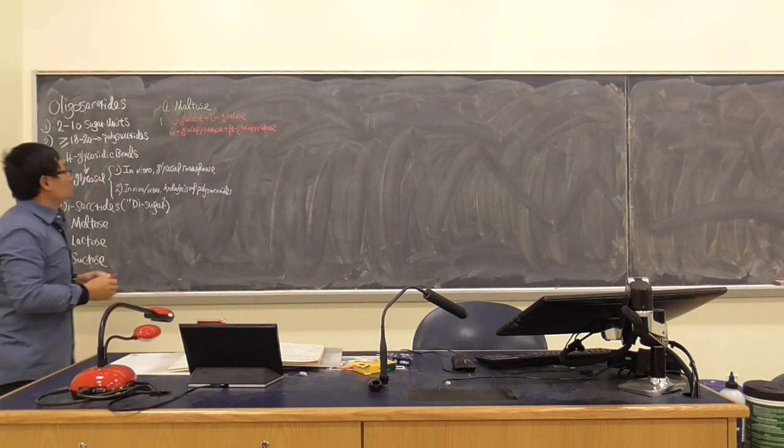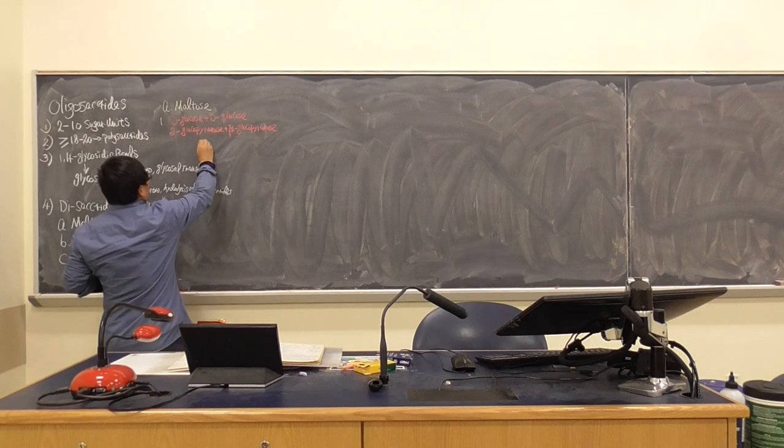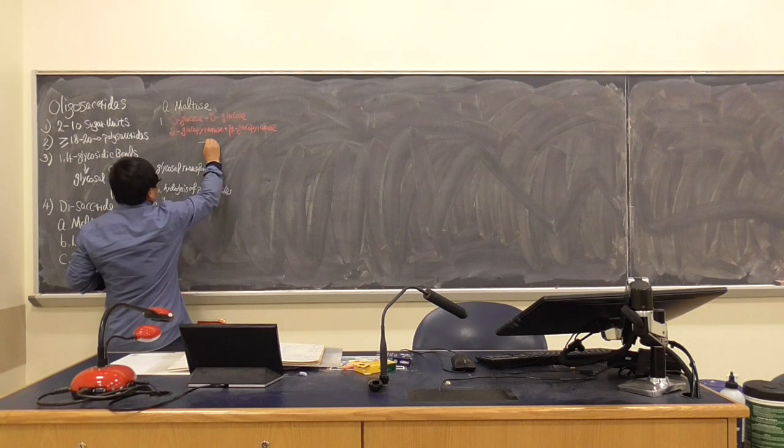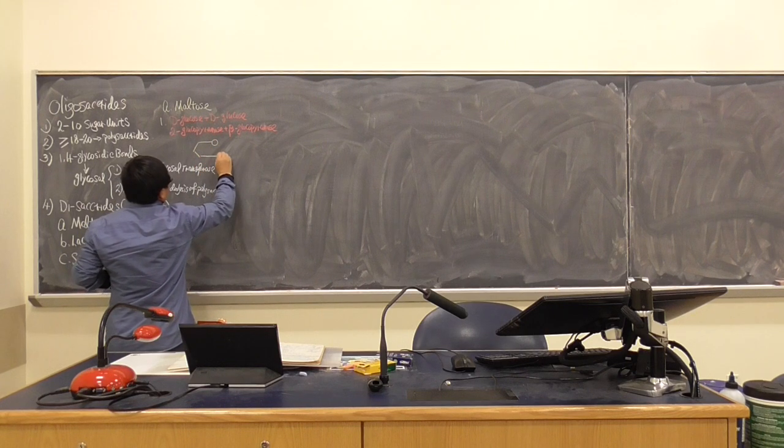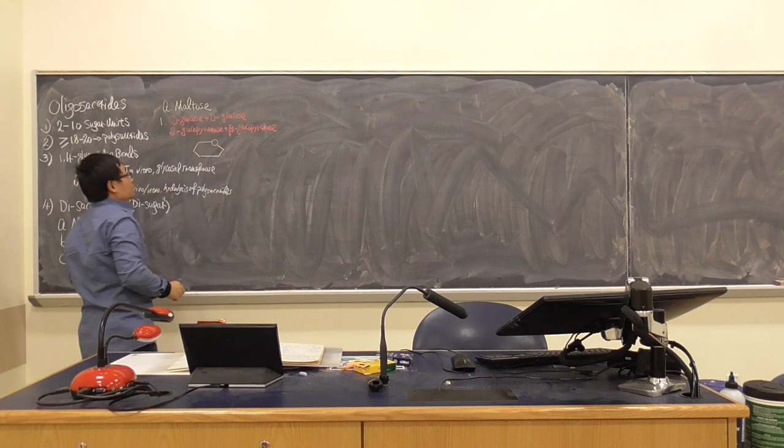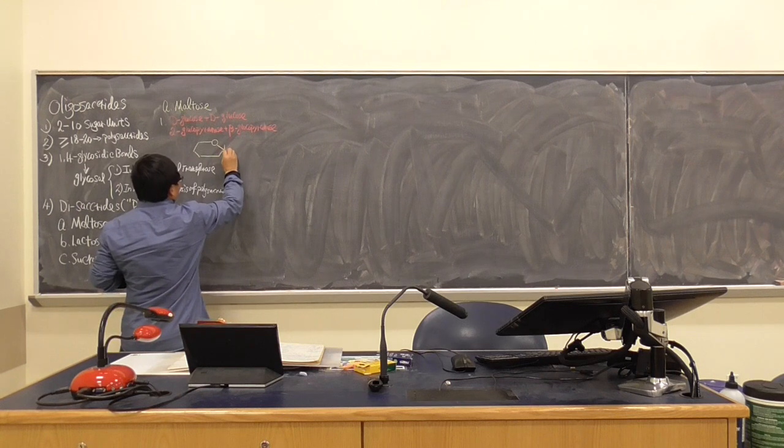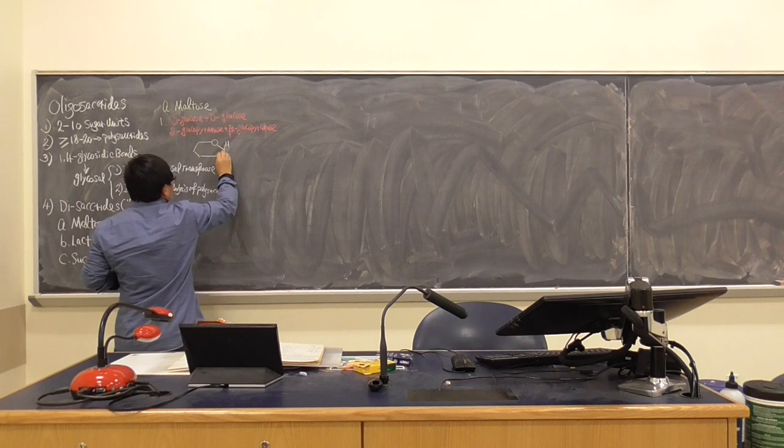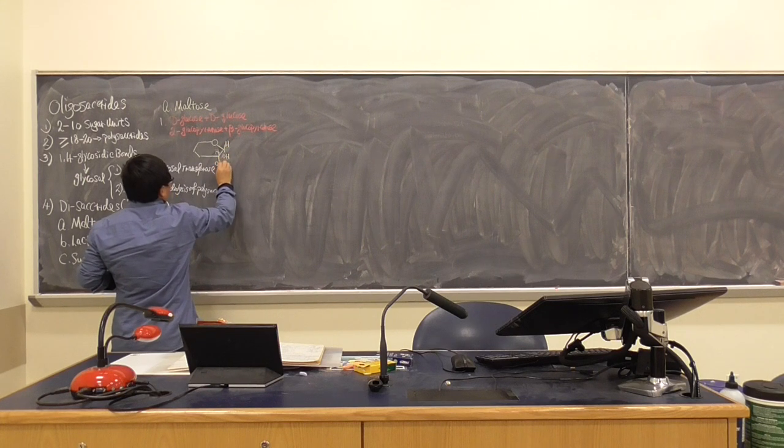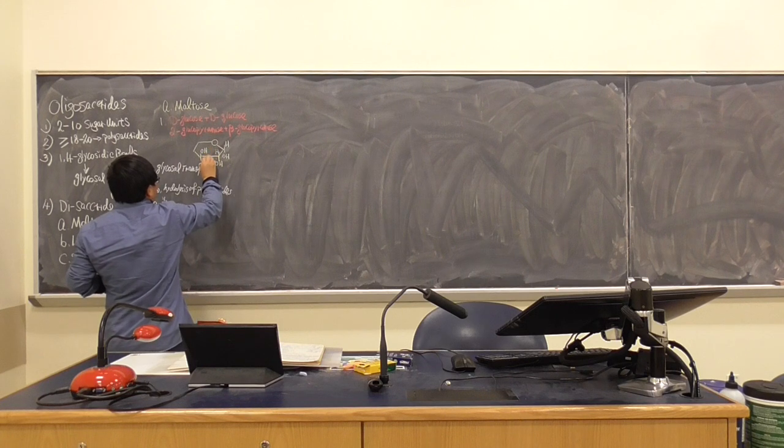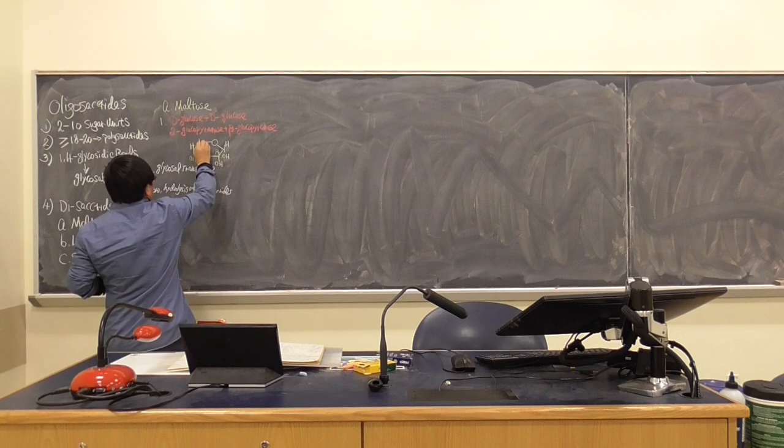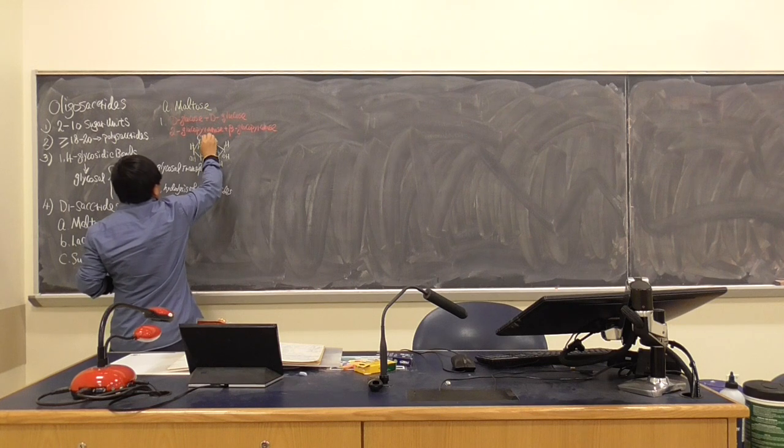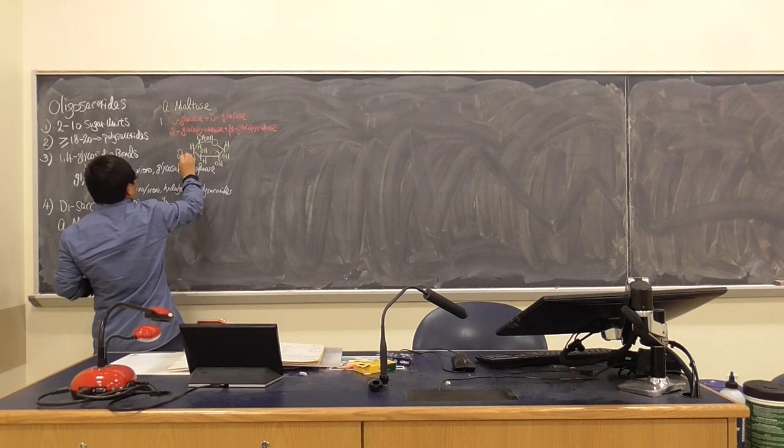The first thing we want to talk about is maltose. What is the structure of maltose? It is relatively easy compared to the others. It is D-glucose with D-glucose. Glucose and glucose combine together and become maltose. There could be alpha-glucopyranose with beta-glucopyranose.